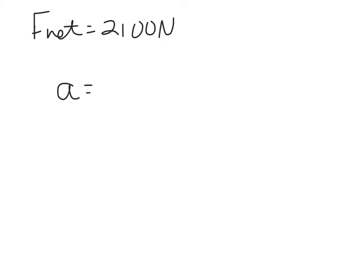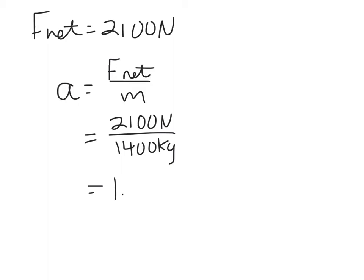Once I have net force and mass, I can find acceleration using a equals Fnet over m. So acceleration equals 2100 newtons divided by 1400 kilograms. And this equals 1.5 newtons per kilogram. And again, newtons per kilogram is the same unit as meters per second squared. When dealing with kinematics, usually it makes more sense to use acceleration in meters per second squared.